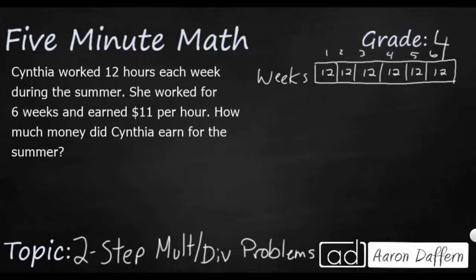So I drew this up here. Six weeks, twelve hours a week. So six times twelve is going to get me a total of seventy-two hours. She makes eleven dollars per hour. So I just need to multiply those two and I'm going to be able to get my total amount of money, which is a respectable seven hundred and ninety-two dollars.